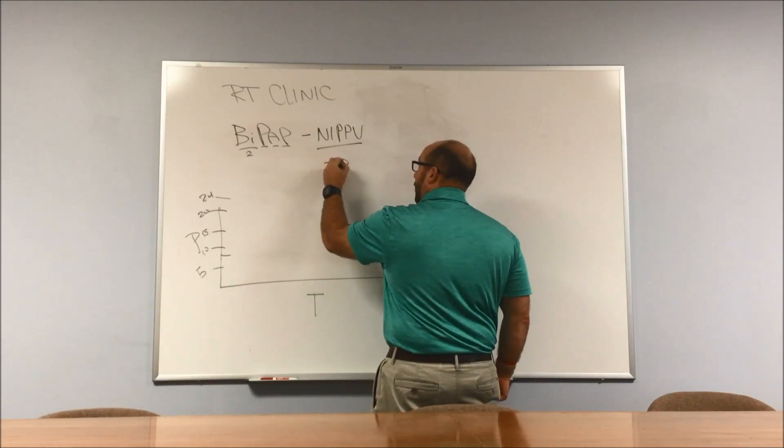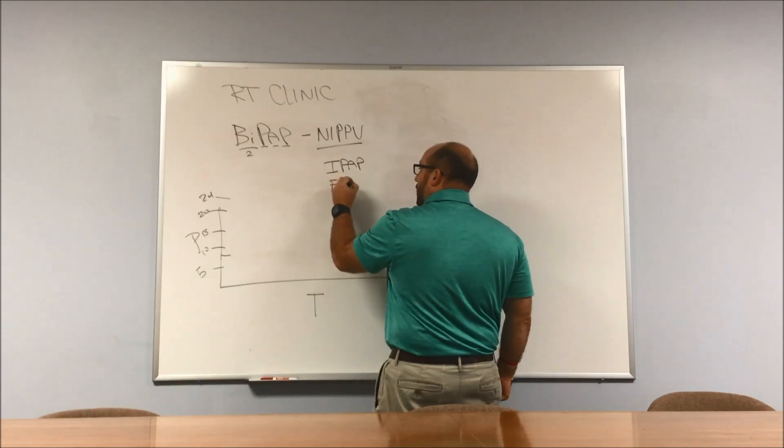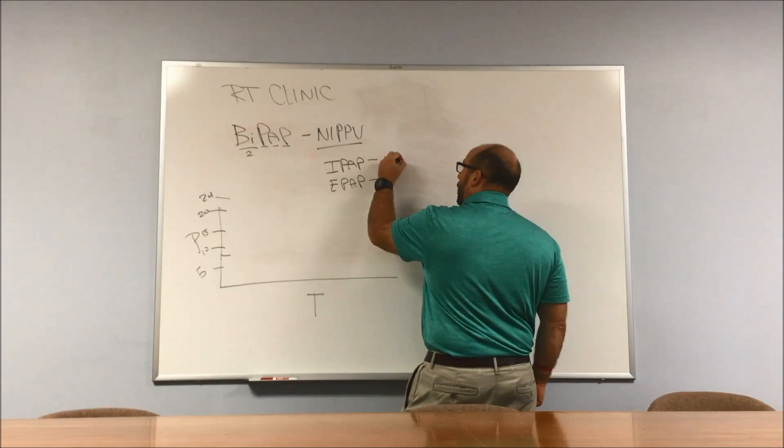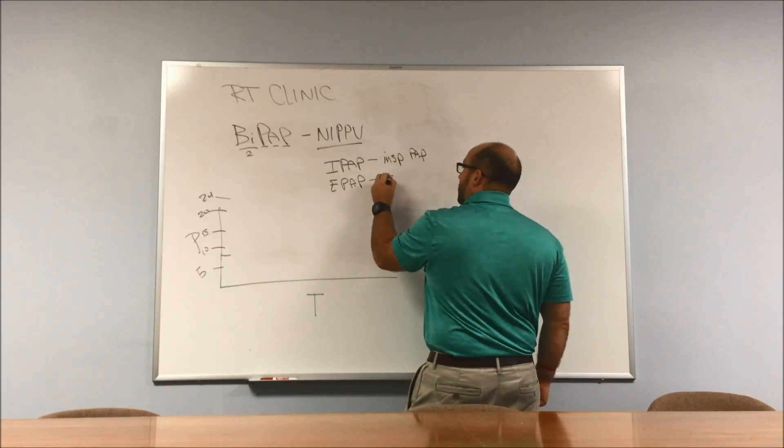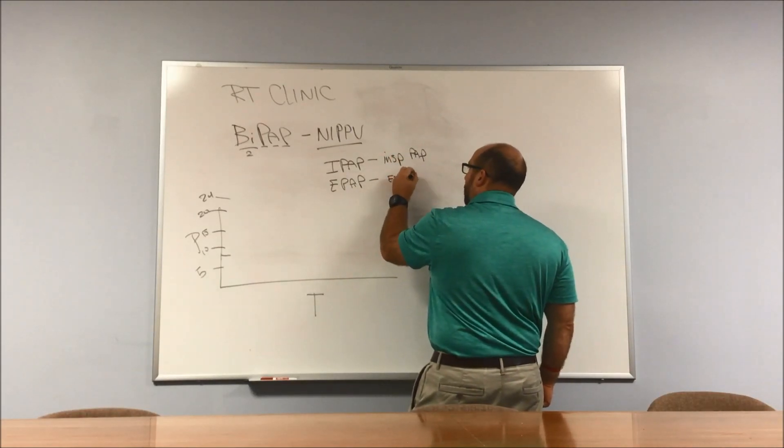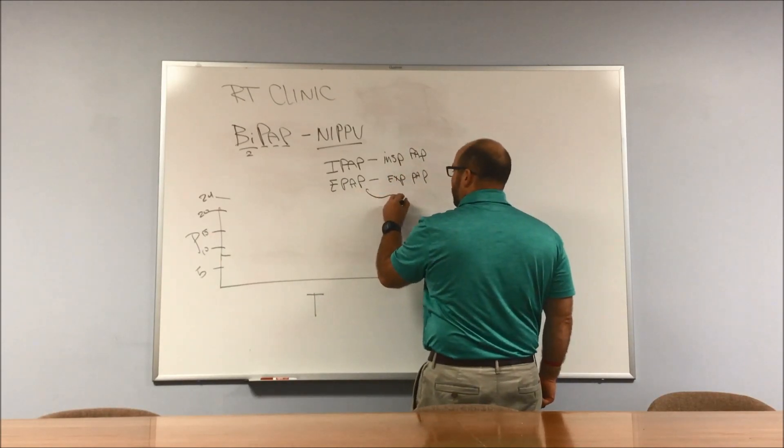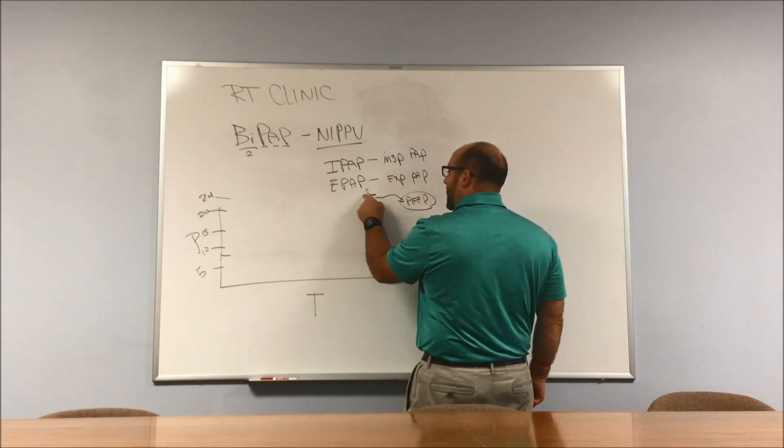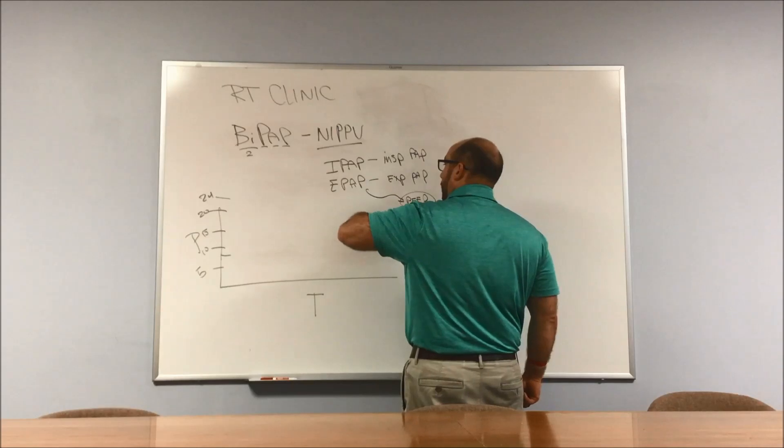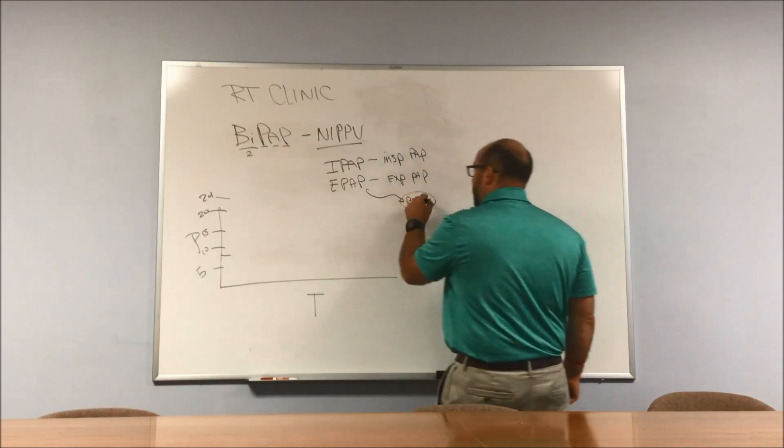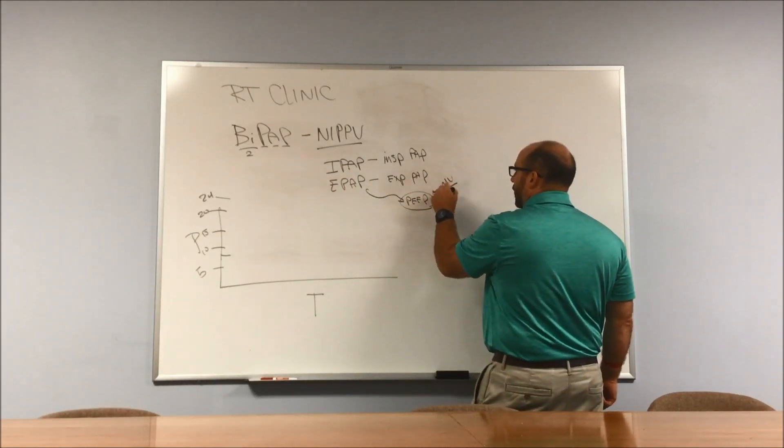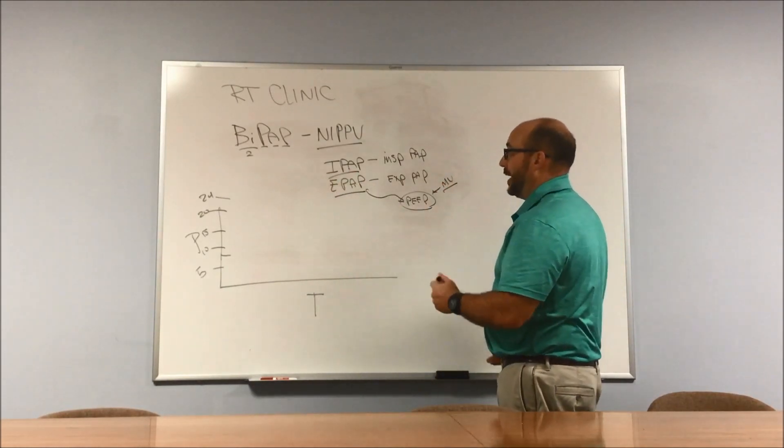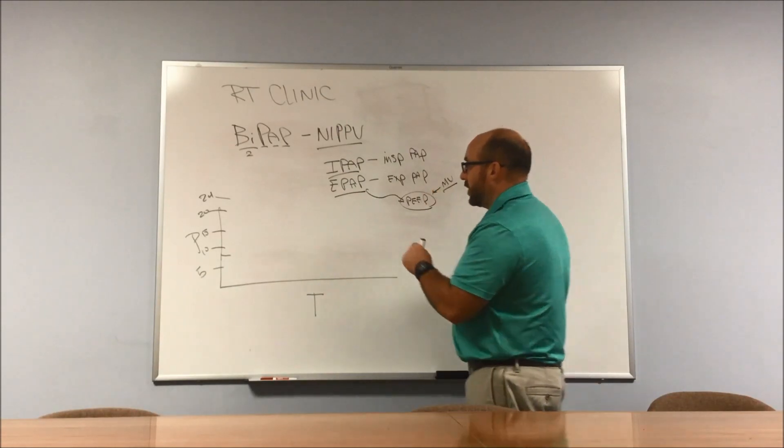NIPPV - same thing as BiPAP. Non-Invasive Positive Pressure Ventilation. So two pressures - you have these two pressures, one's called an IPAP, and don't you love acronyms? IPAP is Inspiratory Positive Airway Pressure, and this is Expiratory Positive Airway Pressure. Sometimes people will think, well isn't that kind of like PEEP, Jimmy? Well, kind of is, but PEEP is Positive End Expiratory Pressure. This is a continuous positive expiratory pressure, so it's a little bit different. People usually think of when we think of a mechanical ventilator and mechanical ventilation.